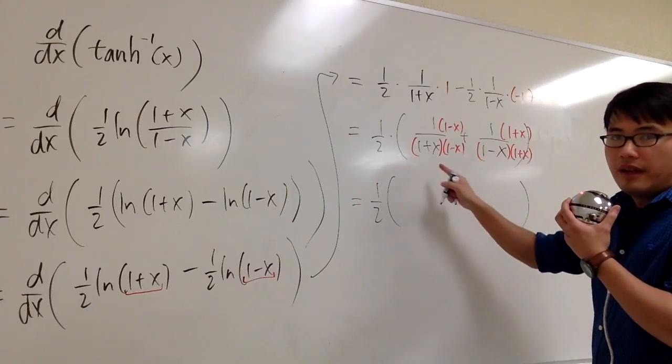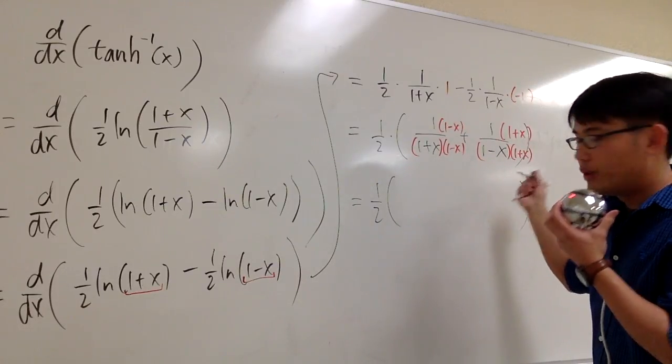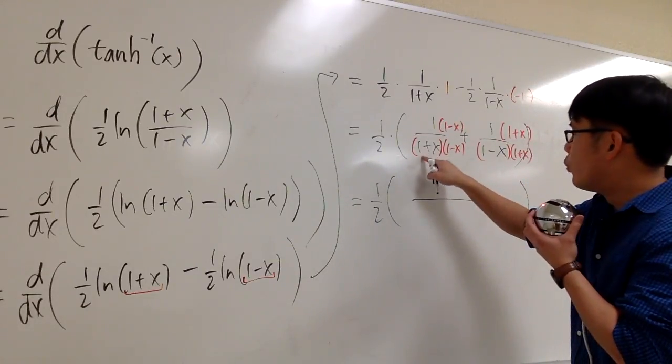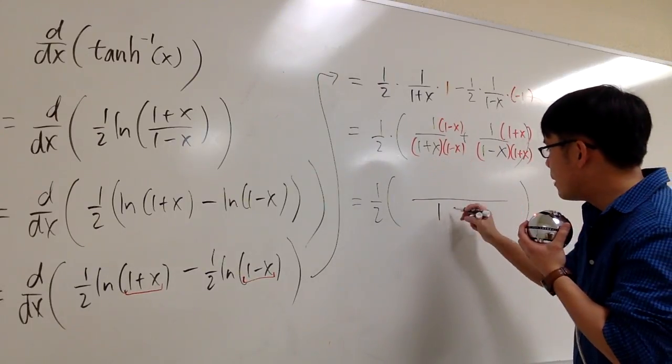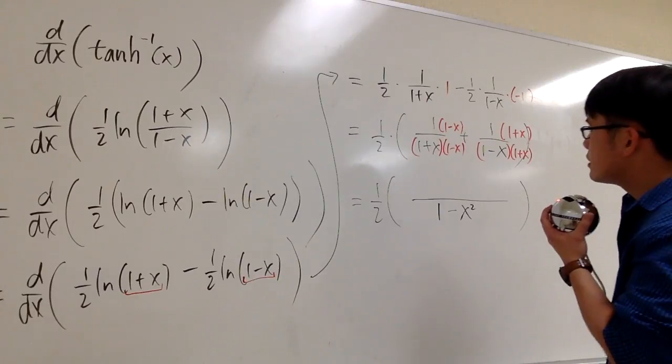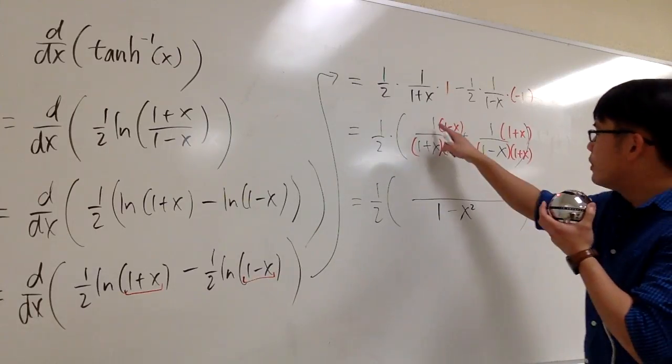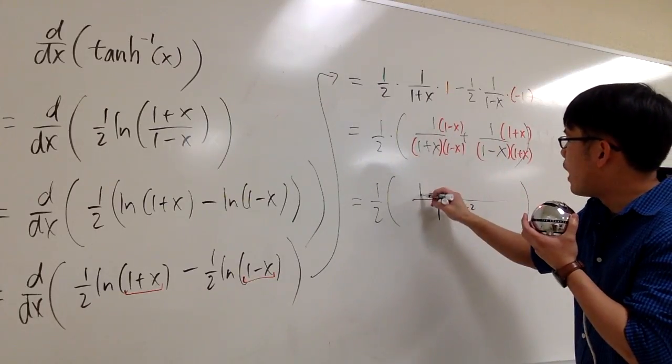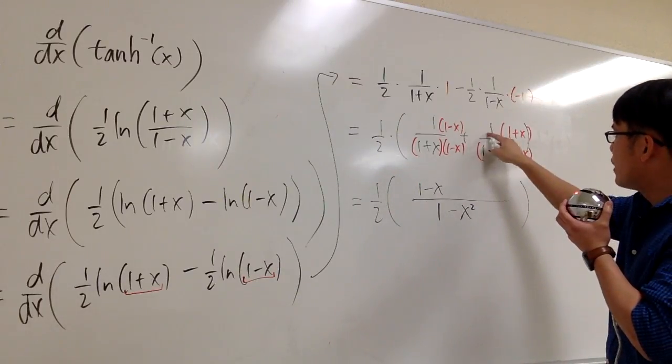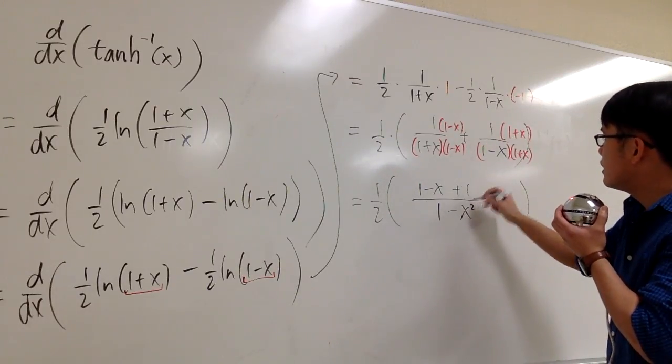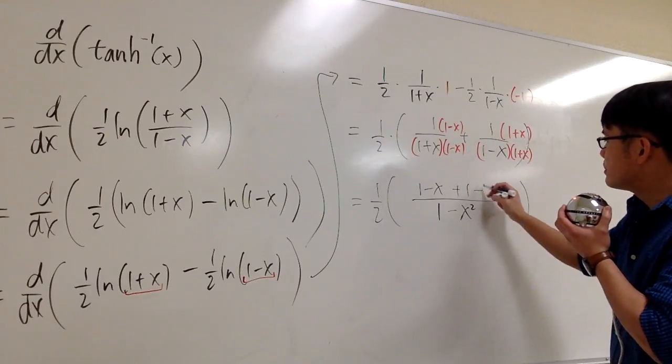The 1 half is still all the way in the front. And then inside here, they will have the same denominator, and the denominator is going to be 1 plus x times 1 minus x, which the product will be 1 minus x squared. And then on the top, the first fraction is going to be 1 minus x. And then for the second part, this is positive 1 times 1, which is plus 1, positive 1 times x, which is plus x.